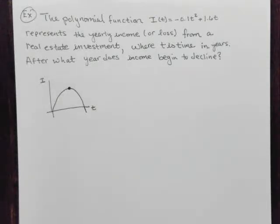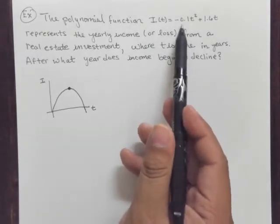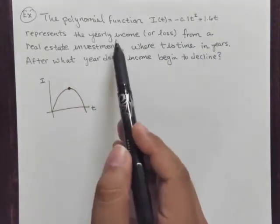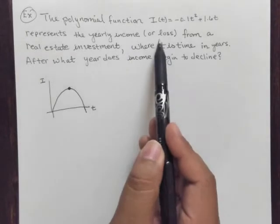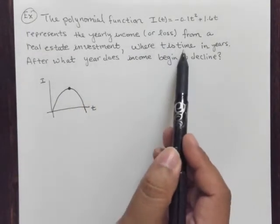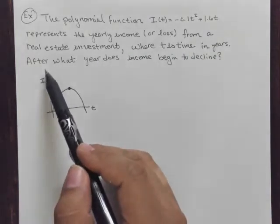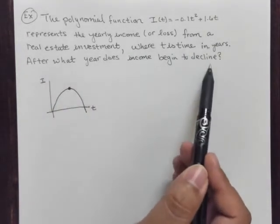We're looking at an application of quadratic functions, and this one is really quite interesting because it is really the underlying concept more than an application. It says the polynomial function I of t represents the yearly income or loss from a real estate investment, where t is time in years. The question is: after what year does income begin to decline?